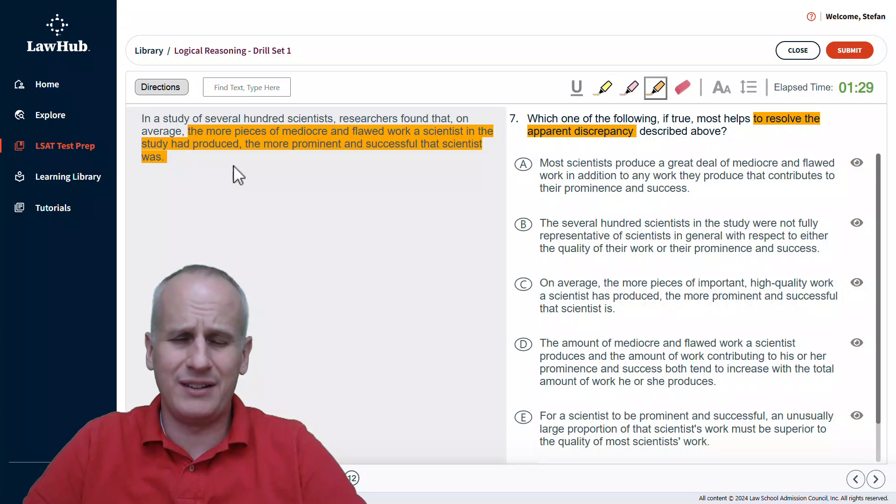Hopefully, there's a relatively intuitive reaction of, well, yeah, you have to try a lot to become a prominent and successful scientist, so maybe on the path to succeeding, you had to produce some mediocre and flawed work and then overcome that mediocre and flawed work to become prominent and successful.